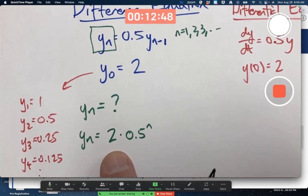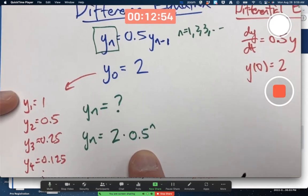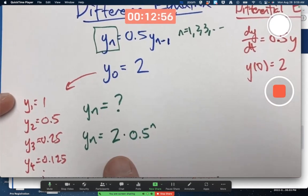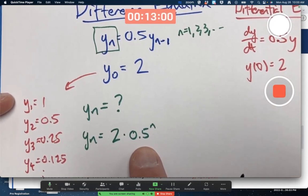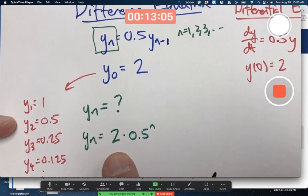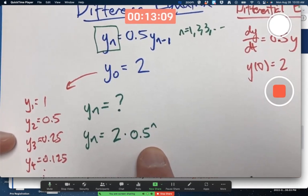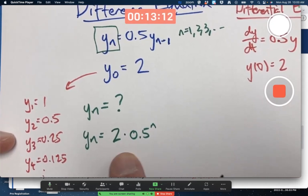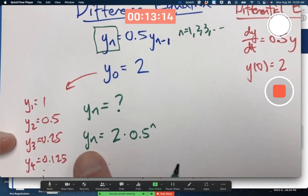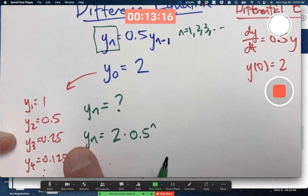When n is 1, I get 2 times 0.5 to the first. 2 times 0.5 is 1. Matches that. When n is 2, 2 times 0.5 squared. 0.5 squared is 0.25 times 2 is 0.5. 0.25. Looks like it's working.